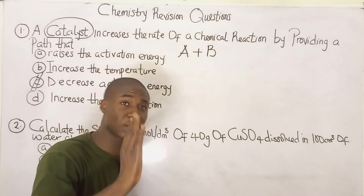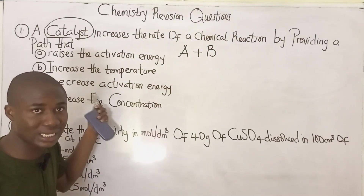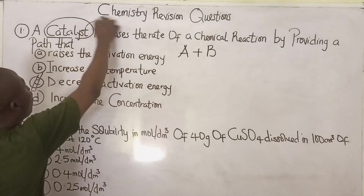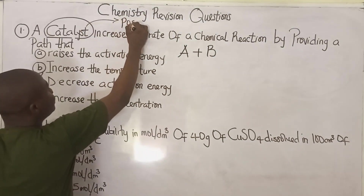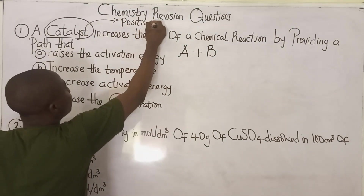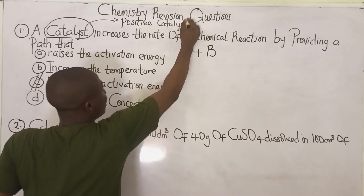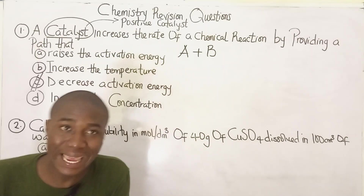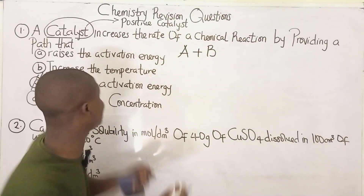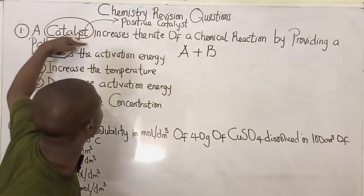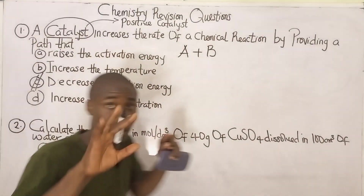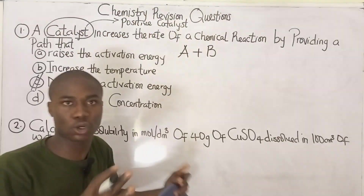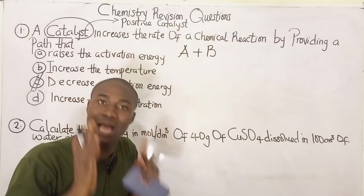When a catalyst increases the rate of a chemical reaction, it decreases activation energy. To be specific, the type of catalyst that does this is the positive catalyst. We classify catalysts as positive and negative. A negative catalyst decreases the rate of a chemical reaction, which means it increases activation energy — and vice versa.